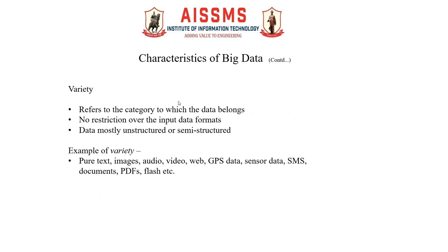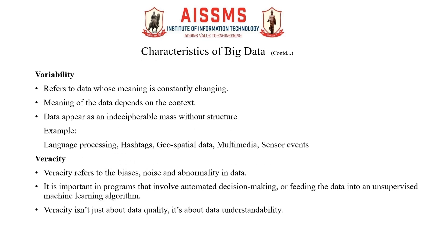The next characteristic is variety. Variety refers to the category to which the data belongs. Data can be in the form of text, images, audio, video, wave, GPS data, sensor data, SMS, documents, PDFs, flash, etc. In all these varieties, data is available. There is no restriction over input data formats — data can be in any format, and most of the data is unstructured or semi-structured. When data is generated in all these varieties, we say it has differing variety.